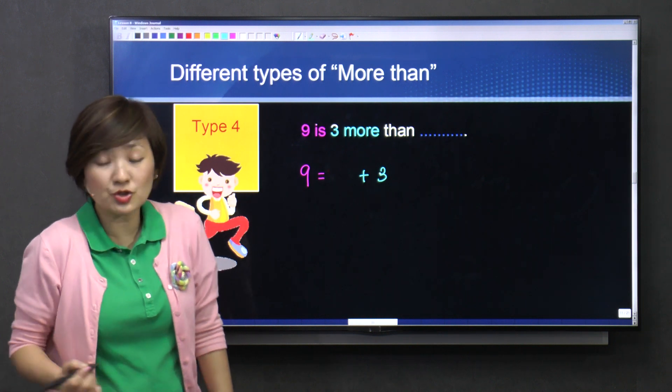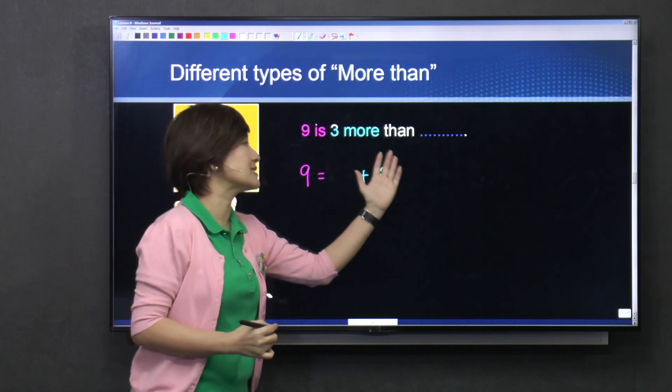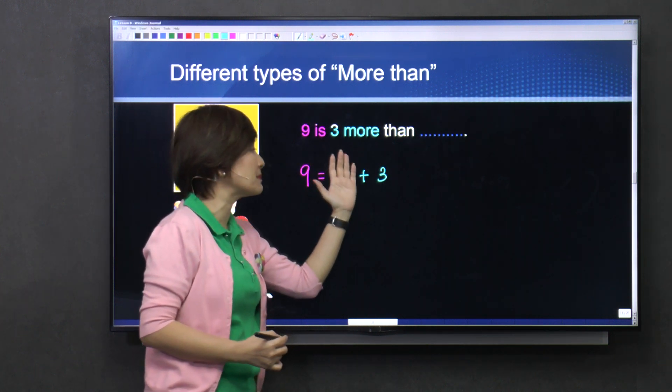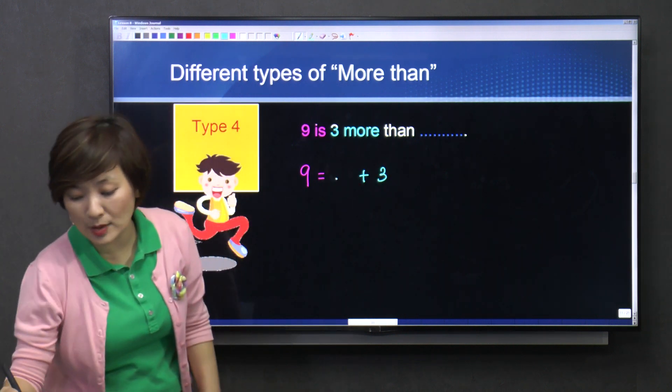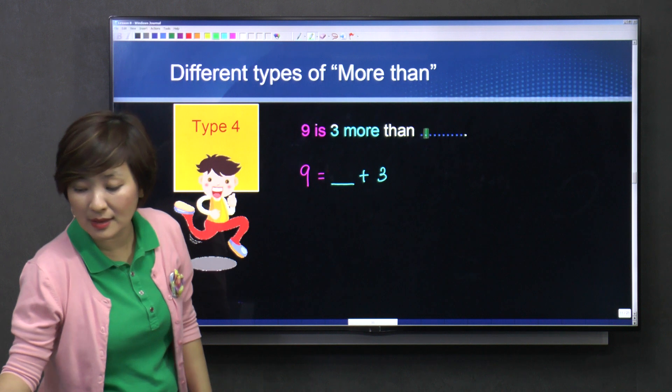So of course, you know that an addition sentence must have something plus something equals to answer, right? So this one is answer is equal to something plus three. Okay, so I know that I have a something here, a blank here, which corresponds with this.